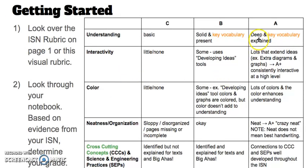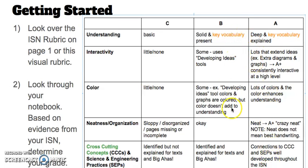If you're going for an A, think about how you can go further — to show interactivity at an A level. Look at the rubric to see what that looks like. If you're trying to get an A, you should be consistently across that column, not just strong in one area. If you're getting an A+, you're going to be consistently in that top category.